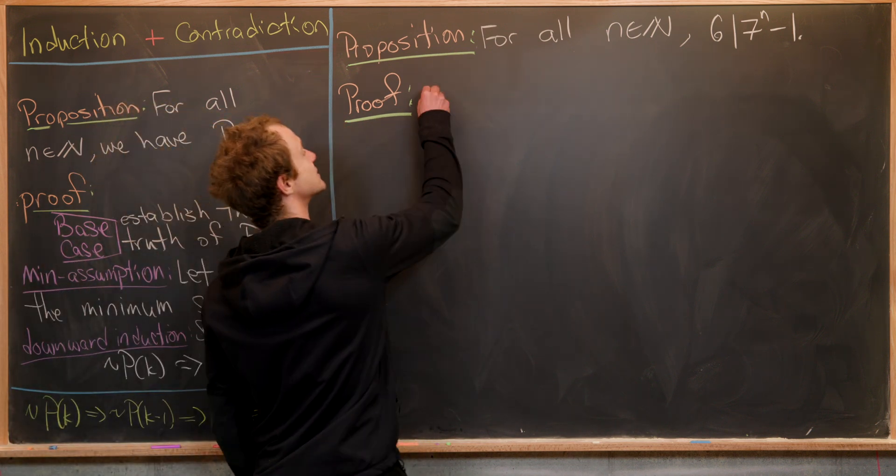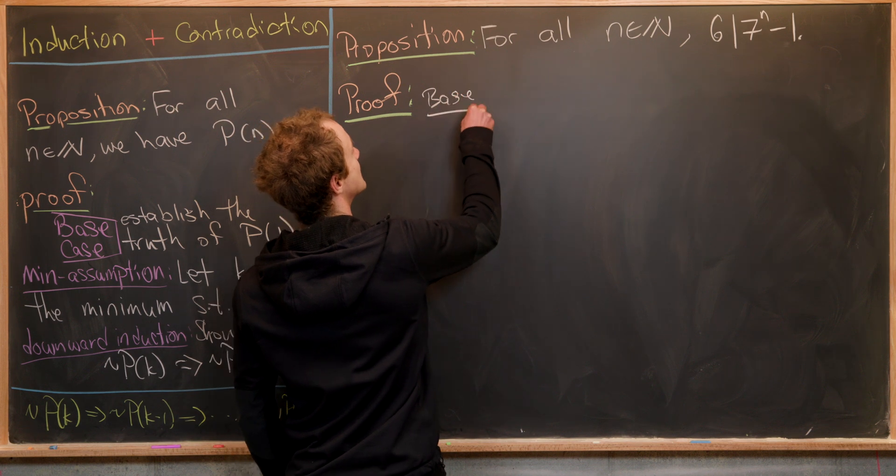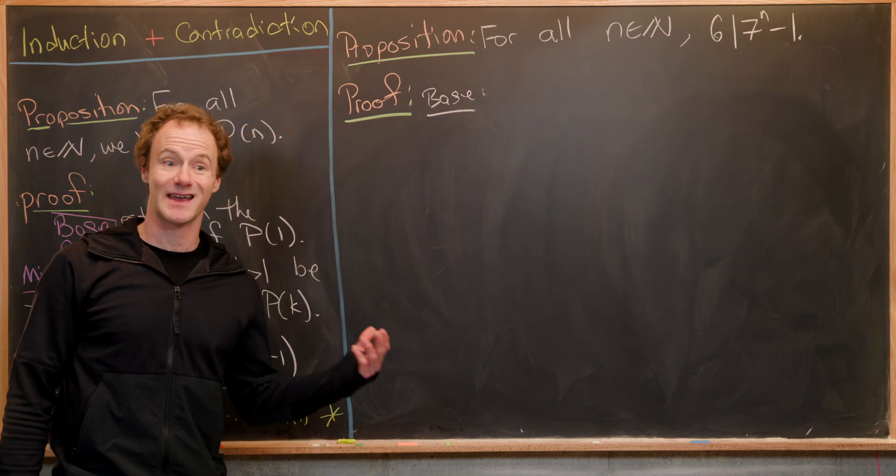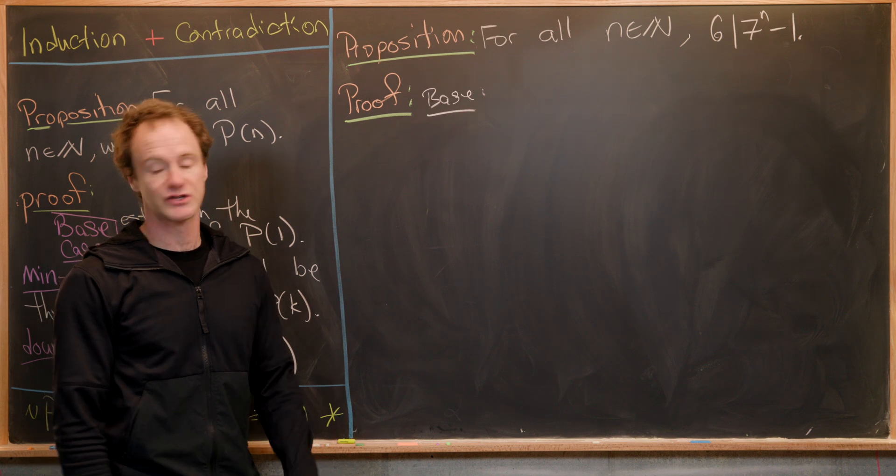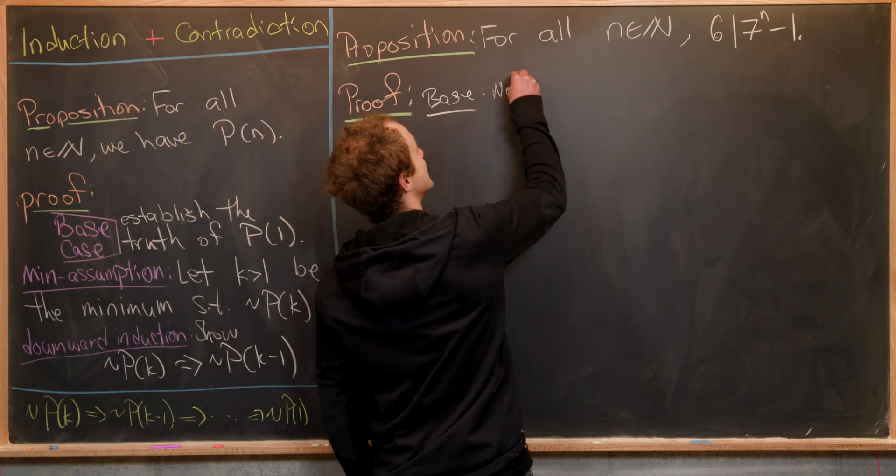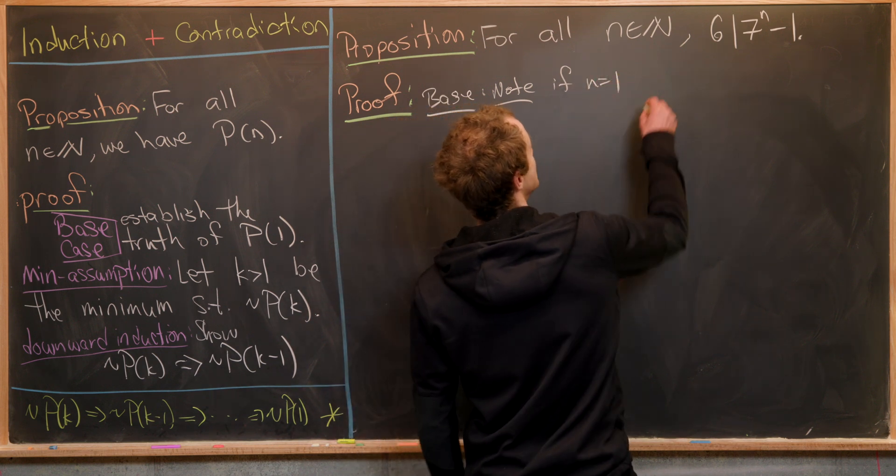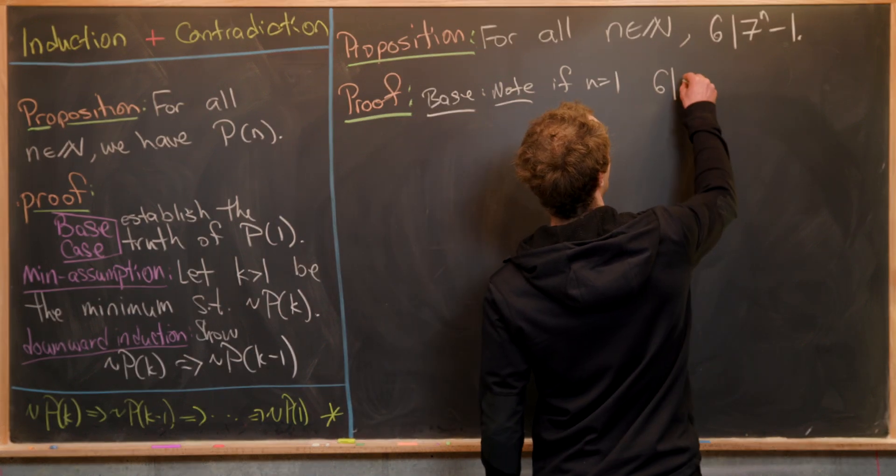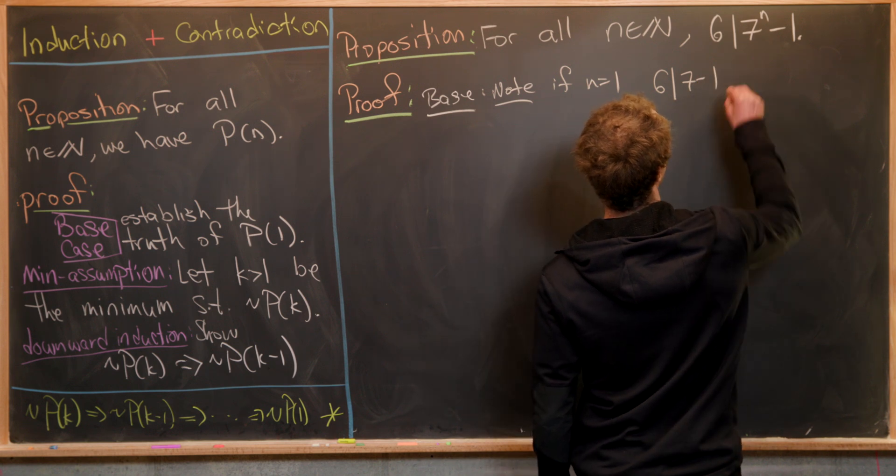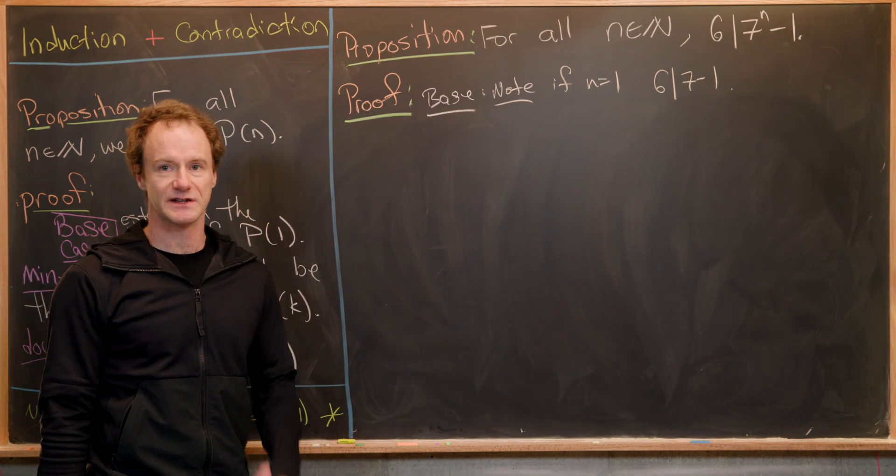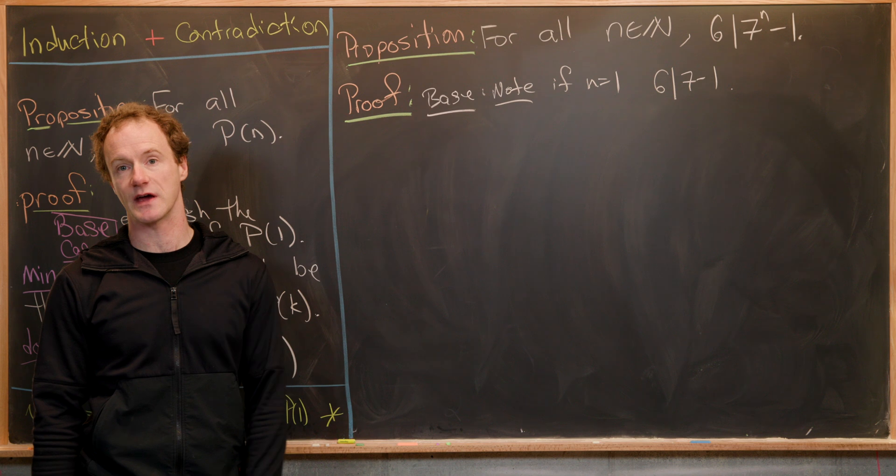Let's start with our base case. Just like happens a lot of the time, the base case is totally trivial. If n equals one, we have six divides seven minus one. Well, seven minus one equals six, so we're good to go there.